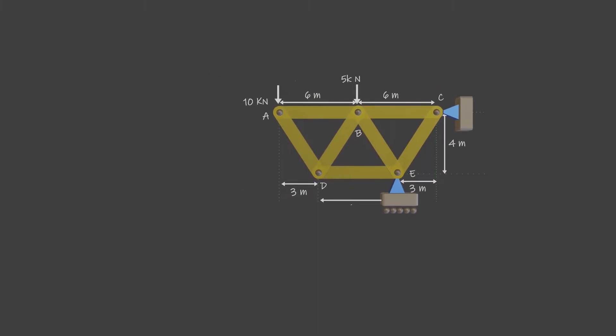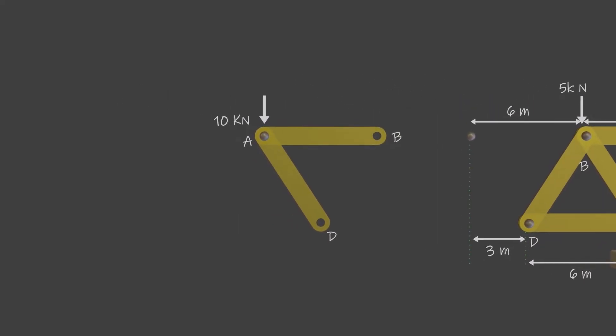For example, consider the pin at joint A of the truss. Three forces act on the pin, namely the 10 kN force, and the forces exerted by members AB and member AD. We don't know whether these two members are either in compression or tension. The forces are unknown.